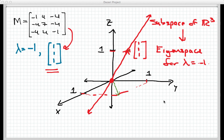Every point, every vector that lies on that line, that lies in that subspace, will be an eigenvector for the matrix with eigenvalue lambda equals negative 1.